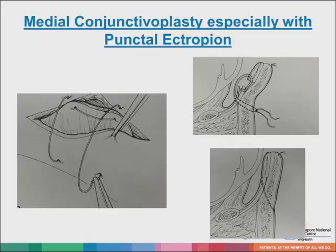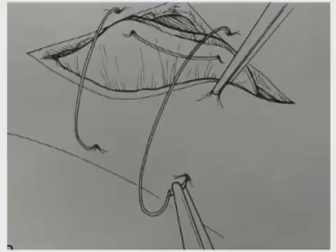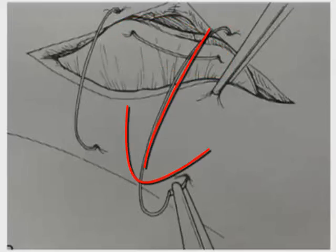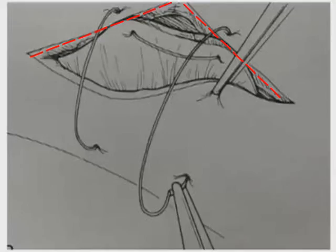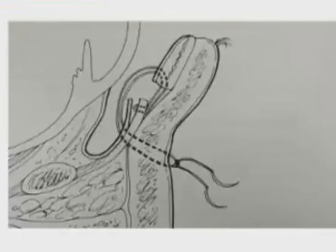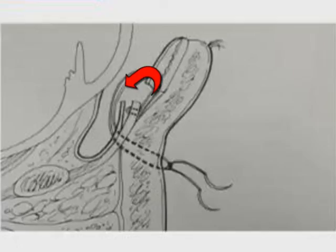To perform a medial conjunctival plasty for punctal ectropion, we perform a medial diamond wedge resection of the conjunctiva, look for the lower lid retractors, and hook them using a double-arm suture. We then pass this suture through the anterior edge of the cut conjunctival diamond, going through the inferior fornix. This causes the anterior edge of the diamond to oppose the posterior edge. The sutures exit through the skin inferiorly and are tied off, producing an inverting effect for the punctal ectropion and the ectropic medial lid margin, as well as addressing medial laxity.